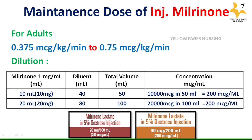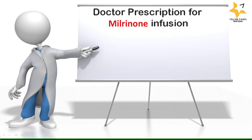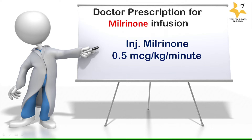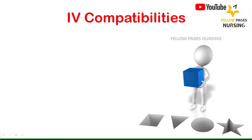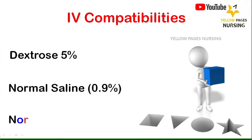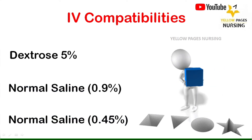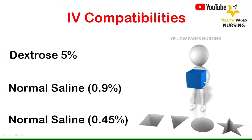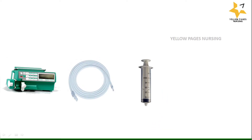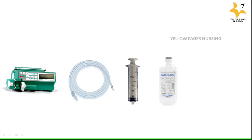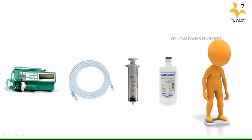Now let's get into the example. The doctor's prescription for milrinone infusion is injection milrinone 0.5 microgram per kg per minute. The IV compatible solutions for diluting milrinone are dextrose 5%, normal saline 0.9%, and normal saline 0.45%. For diluting, all we need is a syringe pump, a PM line, a 50 ml syringe, the solution for dilution, and the patient's body weight.